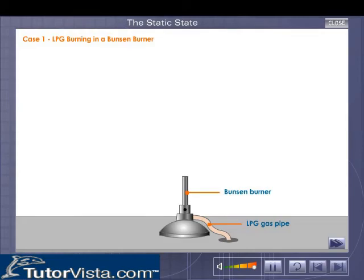Case 1: LPG Burning in a Bunsen Burner. In a Bunsen burner, once the supply of the gas is adjusted, the gas burns, forming mainly carbon dioxide and water vapour.